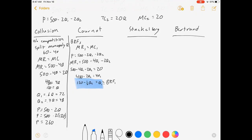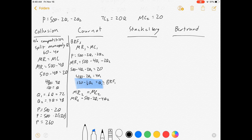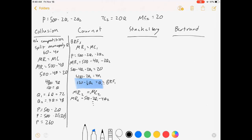That's 480 minus 2Q2 equals 4Q1, so 120 minus half Q2 equals Q1. This is my best response function for firm one and it tells me exactly what firm one should choose no matter what firm two picks. Now I want to get the same thing for firm two. Marginal revenue for firm two is 500 minus 2Q1 minus 4Q2, and you're going to get the best response for firm two where Q2 equals 120 minus half of Q1.